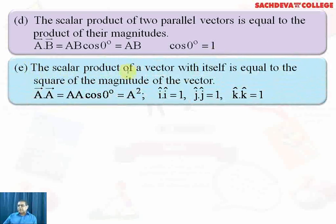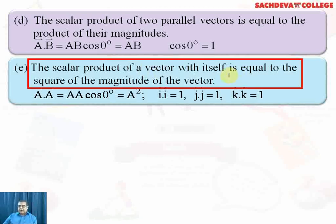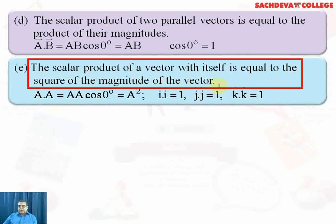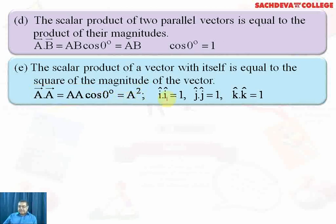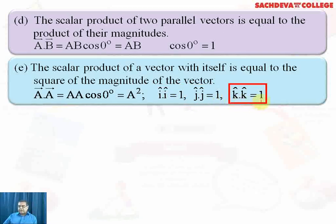Another property is the scalar product of a vector with itself. The scalar product of a vector with itself is equal to the square of the magnitude of the vector. If vector A is dot-multiplied by itself, that will become A·A = AA cos 0, and since cos 0 is 1, the result is A squared. Therefore, for unit vectors along the x, y, and z axes: the dot product of I and I is 1, J and J is 1, and K and K is 1 — that is, I² = 1, J² = 1, and K² = 1.